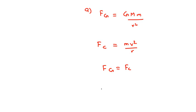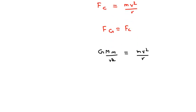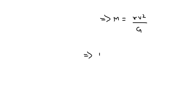So I can write the expression Gm M by R square equals M v square by R. On solving it further, I can write the value of M equals R v square by G. Simplifying it further, just putting the value.